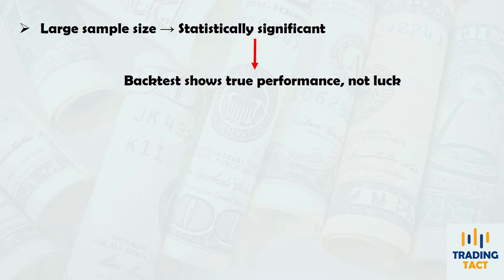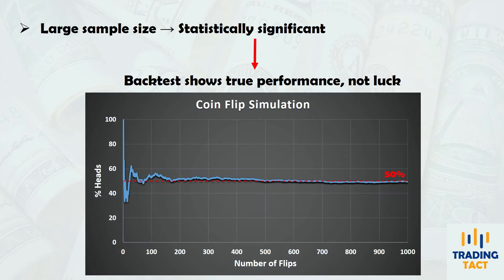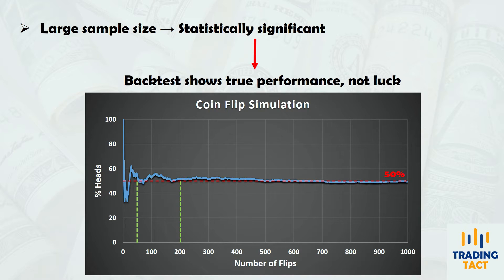Imagine you flip a fair coin multiple times and plot a graph of the percentage of hits. It takes about 200 flips for the percentage to converge towards the theoretical value of 50%. If we have only 50 flips, for example, the effect of luck becomes significant. Since your backtest is the crucial scorecard that accompanies your strategy from inception to live trading, you need to be sure you can trust it.